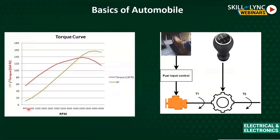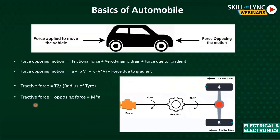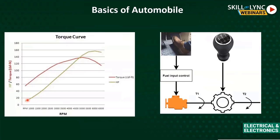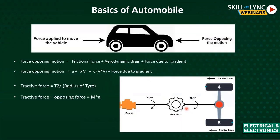The torque-speed curve of an ICE shows that at very low RPMs — around 1000 RPM — the torque provided is very less. This causes engine stalling: if opposing force, especially static friction, exceeds the attractive torque, the engine decelerates. When the engine decelerates, the torque drops further below opposing forces, causing stalling. Therefore we cannot use the engine efficiently without gears.